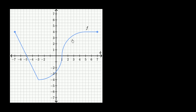So right over here, we have the graph of the function f, and we're assuming that f is a function of t. Our horizontal axis here is the t-axis. So that is f of t, lowercase f of t.